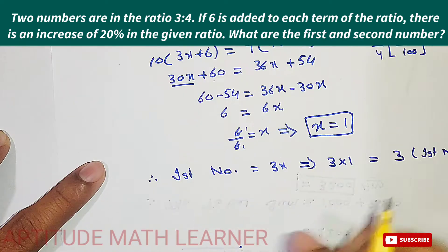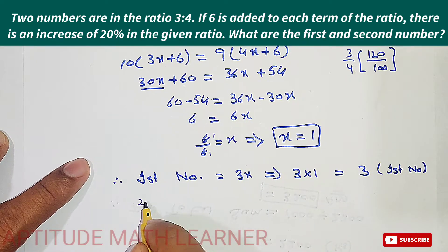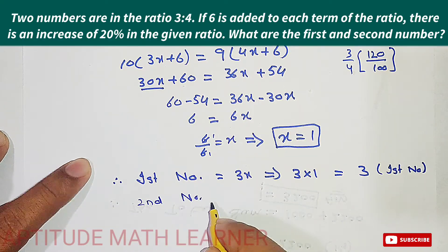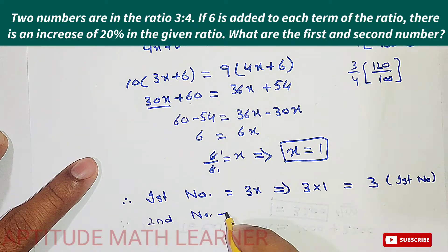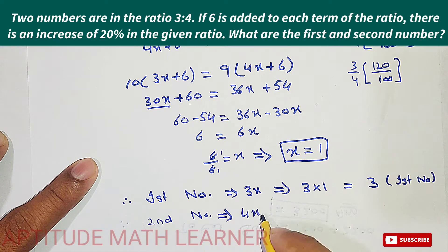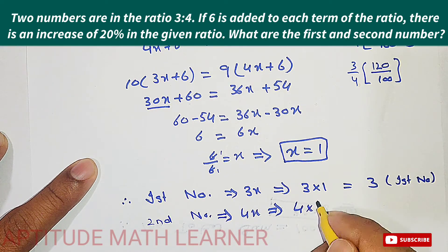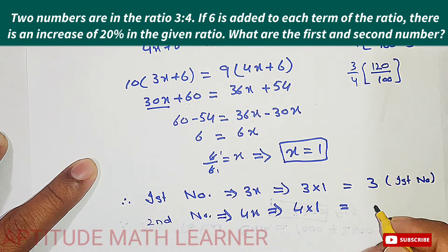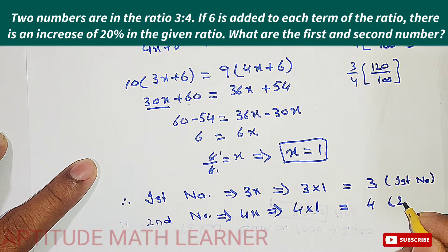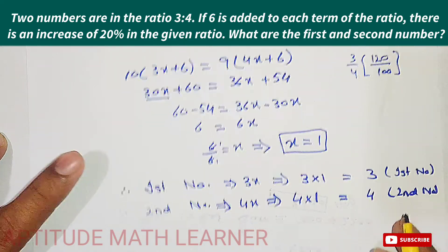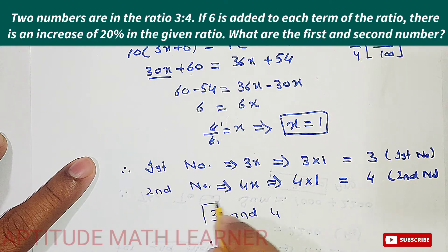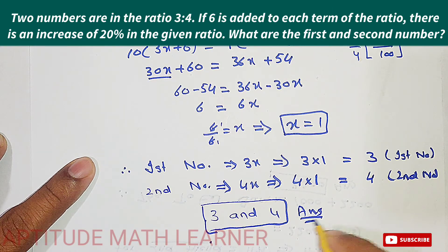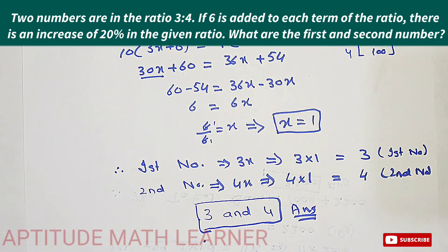For the second number, we have 4x, which is 4 multiplied by 1, giving us 4 as the second number. So 3 and 4 are the first and second numbers respectively, and that is our answer. I hope you have completely understood. Thank you very much.